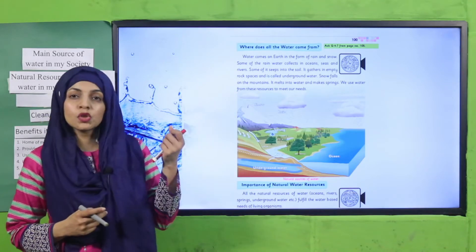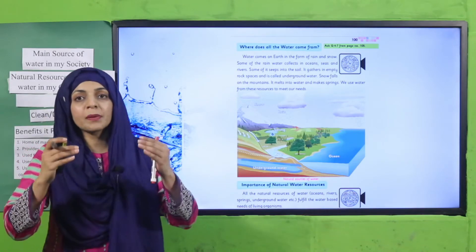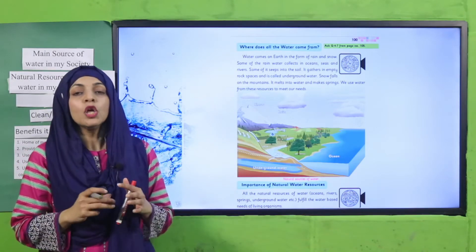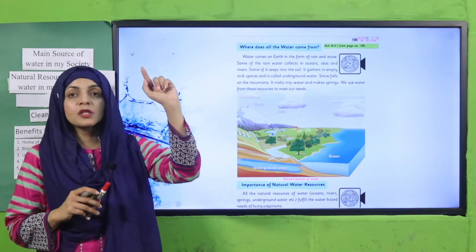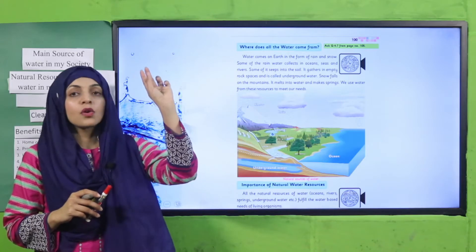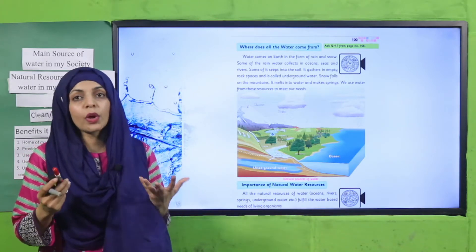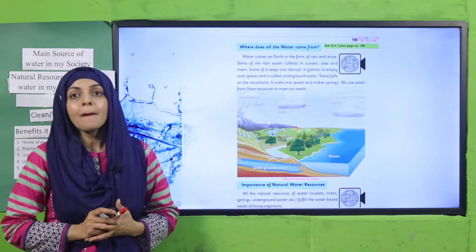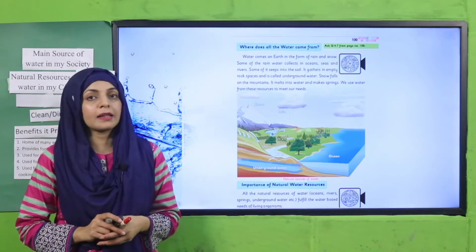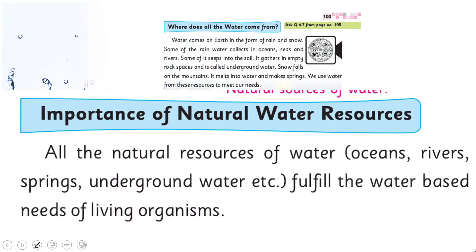The main source of water is snow and rain. When it comes down to the ground, it forms different resources like lakes, springs, streams, rivers, seas, and oceans. These are all resources that are formed by rain and snow, and then we use them. So today we will discuss the importance of natural water resources.